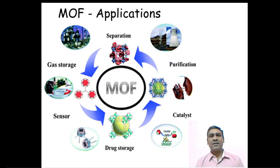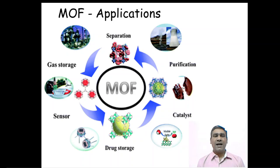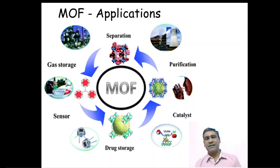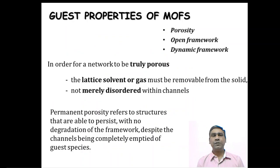Metal organic frameworks are used in separation technology, purification of compounds, as catalysts where reactions take place inside the pores, and for drug storage inside their pores. Recently they are used as sensors — chemical sensors and biosensors — for environmentally hazardous metals, anions, amino acids, etc. They are also used for gas storage, mainly hydrogen, carbon dioxide, and methane.